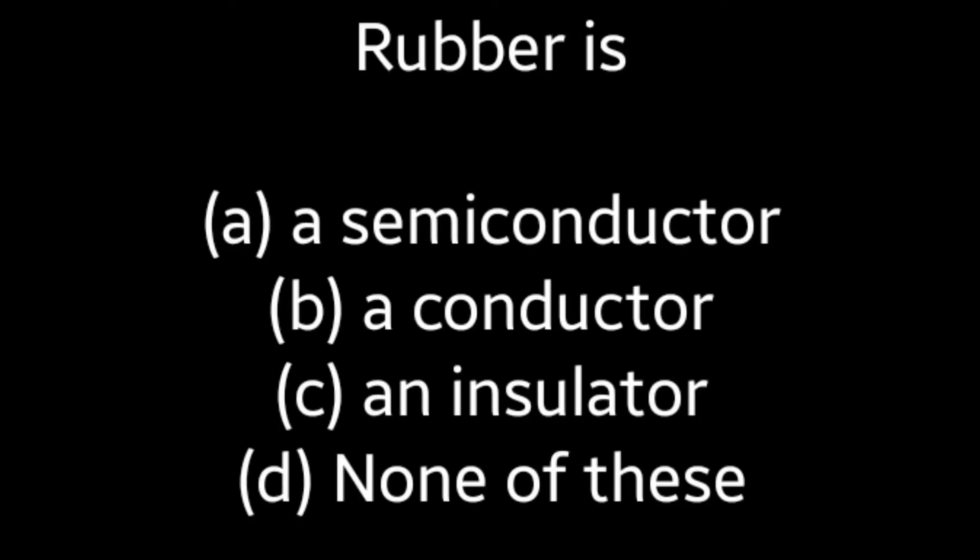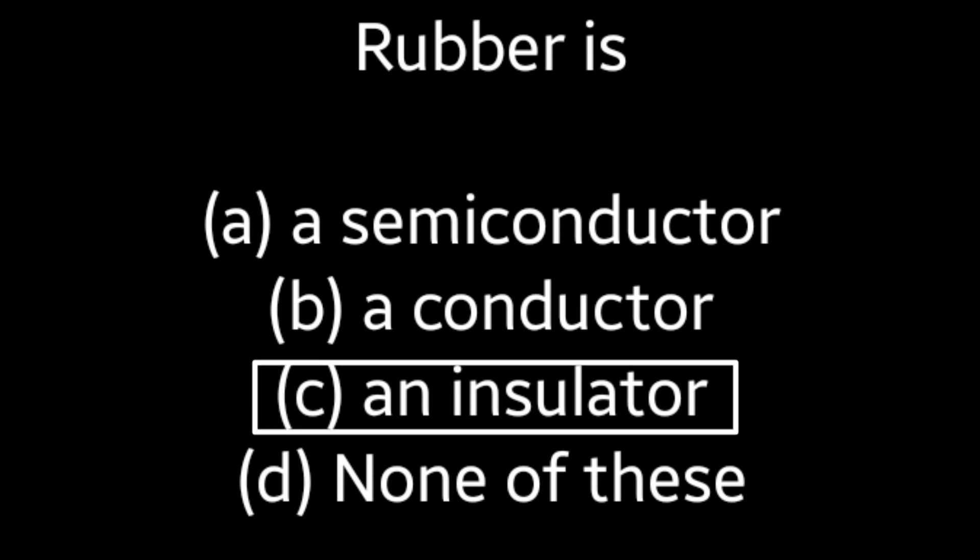Next question: Rubber is (A) a semiconductor, (B) a conductor, (C) an insulator, (D) none of these. Answer is Option C: an insulator.